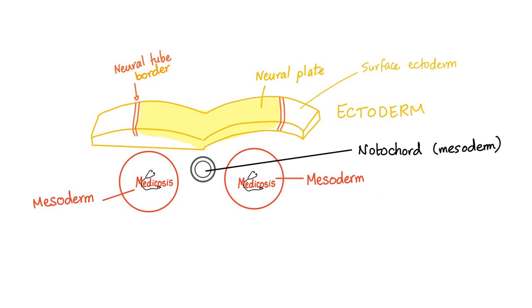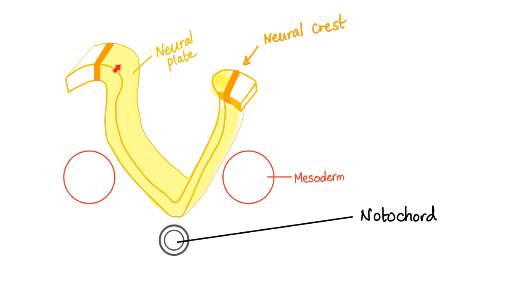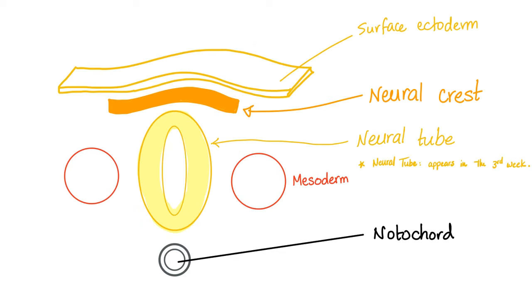How did the neural tube and neural crest come to be? This is the neural plate border and this is the neural plate. This is the surface ectoderm on the outside. The mesoderm has the notochord in the middle and lateral plate mesoderm on the periphery. The structure will start invaginating to become a cylinder. When the neural plate forms a complete circle, we call it the neural tube. The neural tube becomes the central nervous system — brain and spinal cord. The neural crest becomes peripheral nervous system. Surface ectoderm is skin.